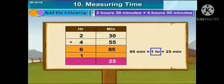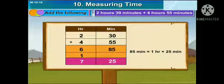So this 1 hour and 25 minutes, you have to add. In the minutes you will be adding 25, and in the hour you have to add 1. That is 6 plus 1 is 7, and 25 as it is. So the answer is 7 hours and 25 minutes.